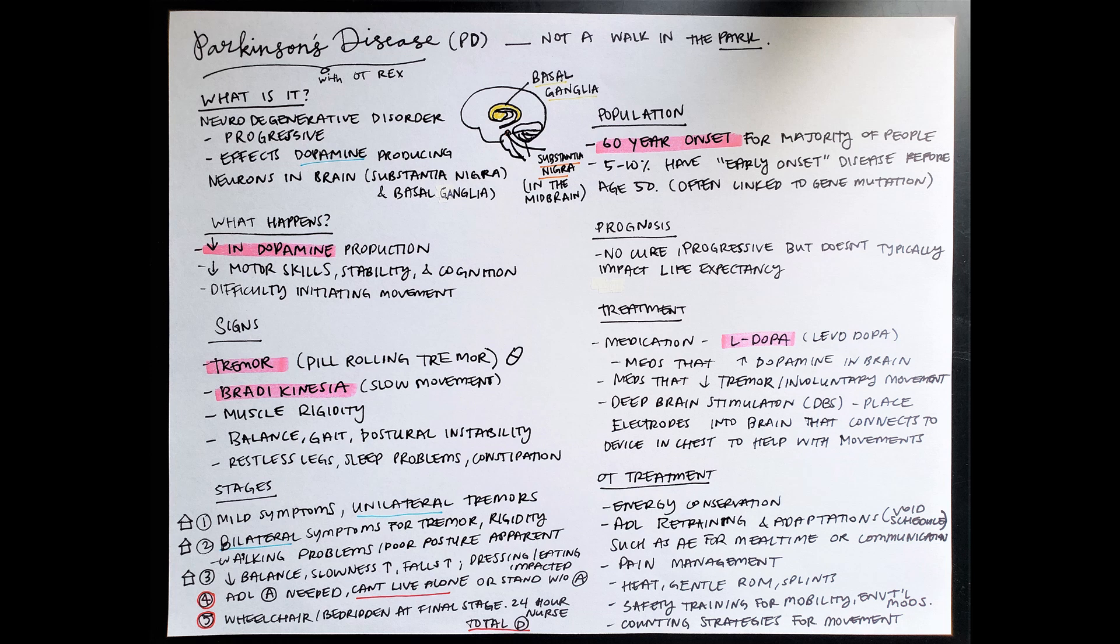Other medications that decrease tremors and involuntary movement also exist that some patients might have success with as well. I also noted that there is something called deep brain stimulation called DBS, and this is when you go through a procedure where the individual has electrodes placed into their brain, and this connects to a device in their chest that helps with their movements that are impacted by Parkinson's. So that might be a treatment that someone may undergo.